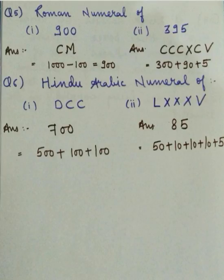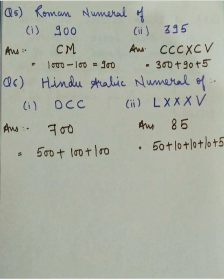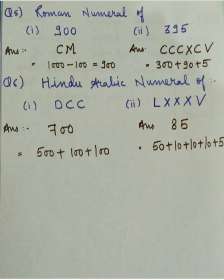The next two questions are based on the Hindu-Arabic numeral system and Roman numeral system. Let's quickly revise both number systems. The numbers we use in our day-to-day life — 0, 1, 2, 3, up to 9 — are called digits, and the number system formed by these digits is called the Hindu-Arabic number system. We also have the Roman numeral system, in which symbols I, V, X, L, C, D, and M are used to represent numbers.